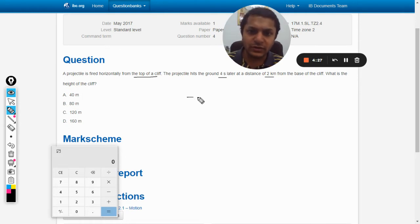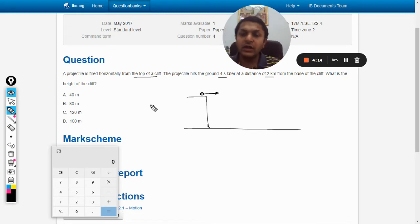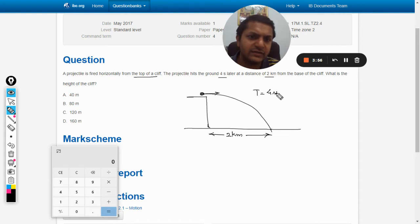The diagram will look somewhat like this. Let us say this is the projectile - a ball or missile, whatever you call such a projectile that is fired horizontally. It is bound to go like this. This position is two kilometers away from the foot of the cliff, and the time taken was four seconds.